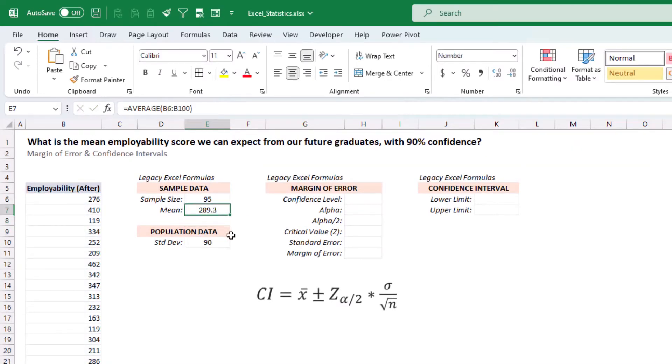So this value of 289.3 is our point estimate, or x bar. Now we need to calculate the margin of error. So to do that, let's start with setting a confidence level, which has already been stated here. So 90%.